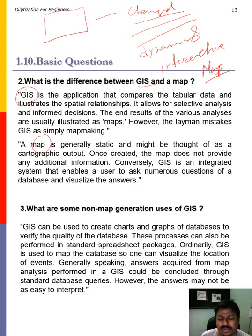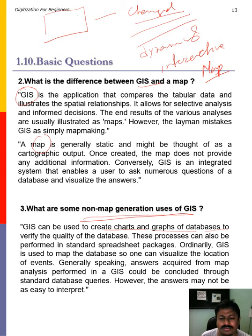There are also various non-map outputs of GIS. You can use GIS to make charts and graphs of the data stored in your attribute table. You can perform analyses not directly related to map output but still using the geo-referenced information stored in the attribute table.